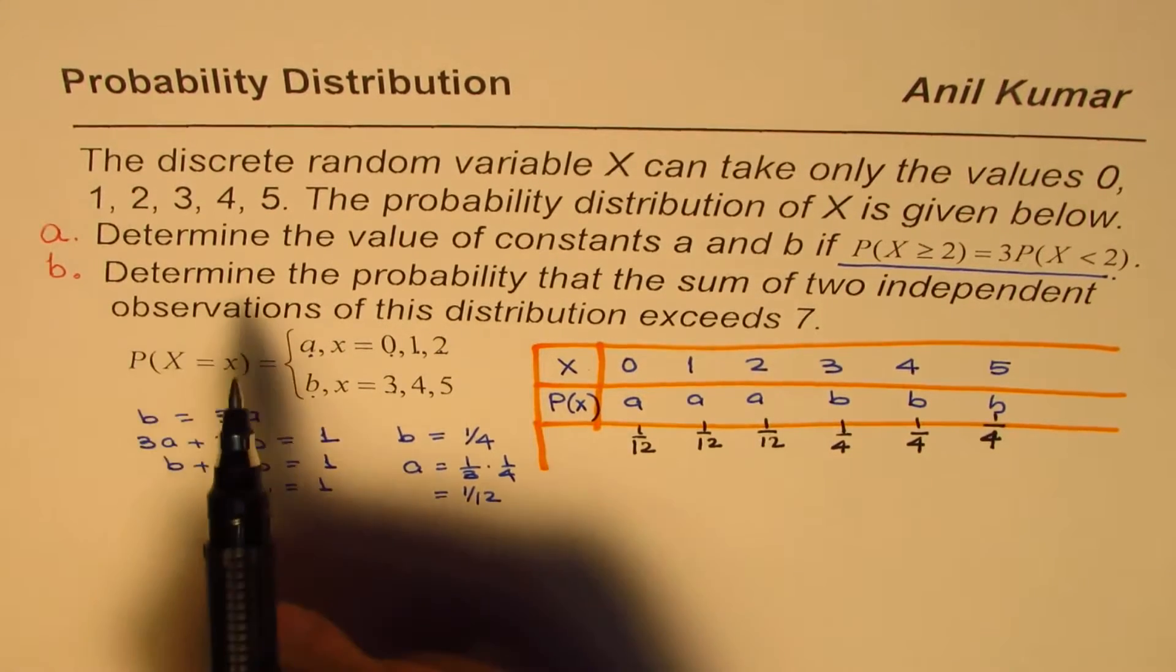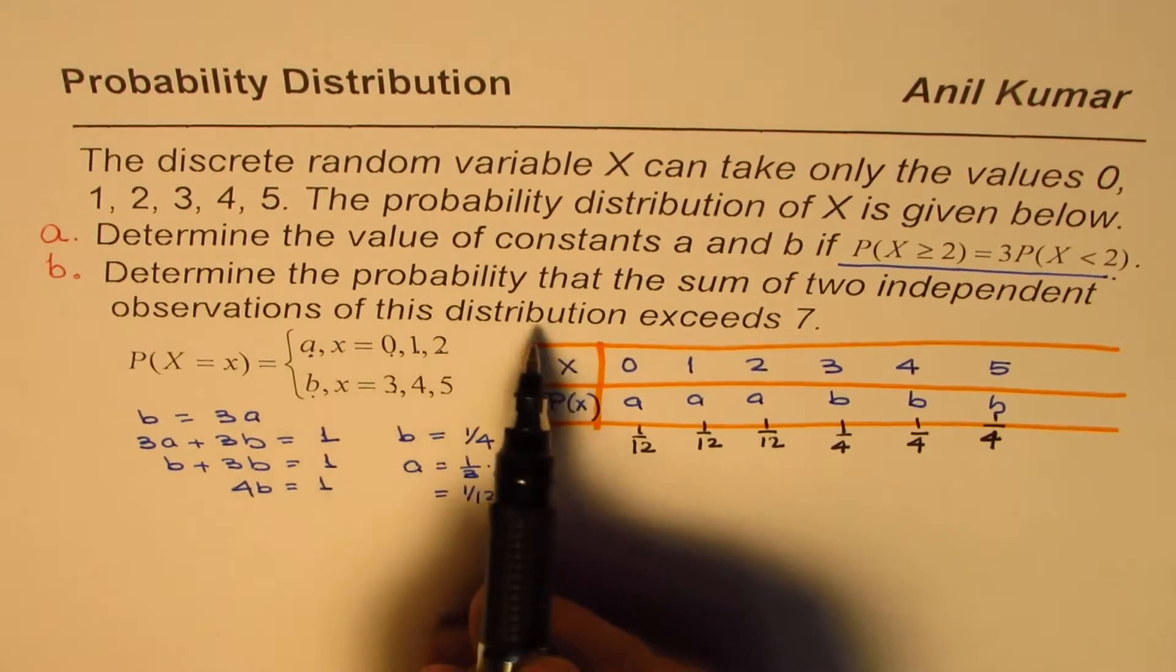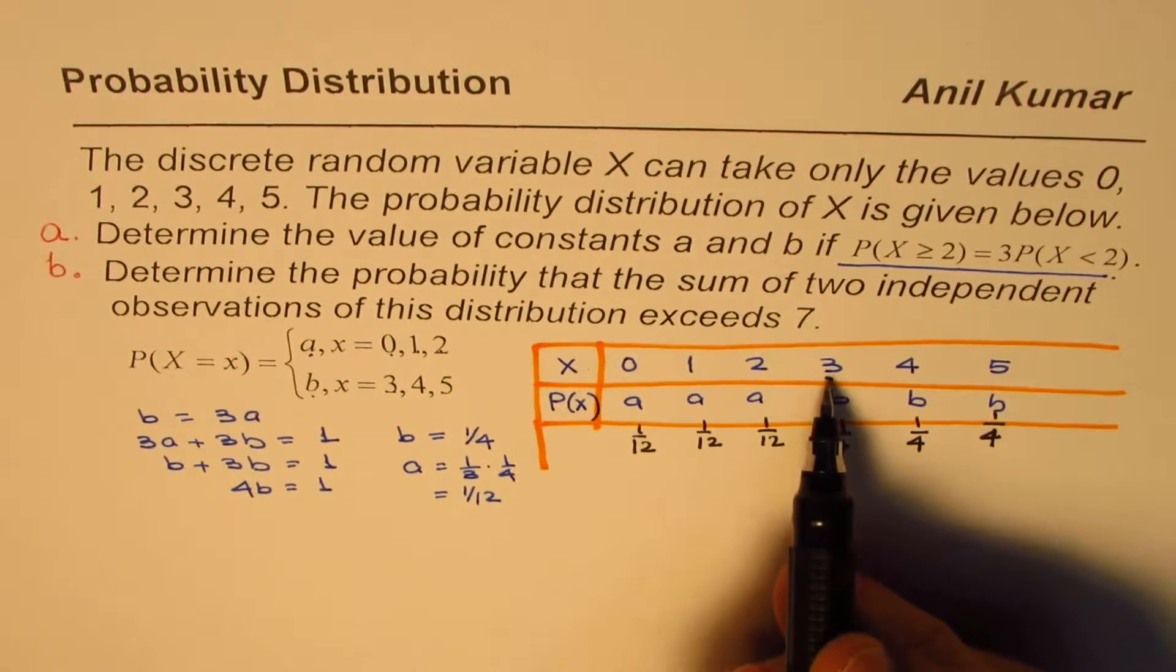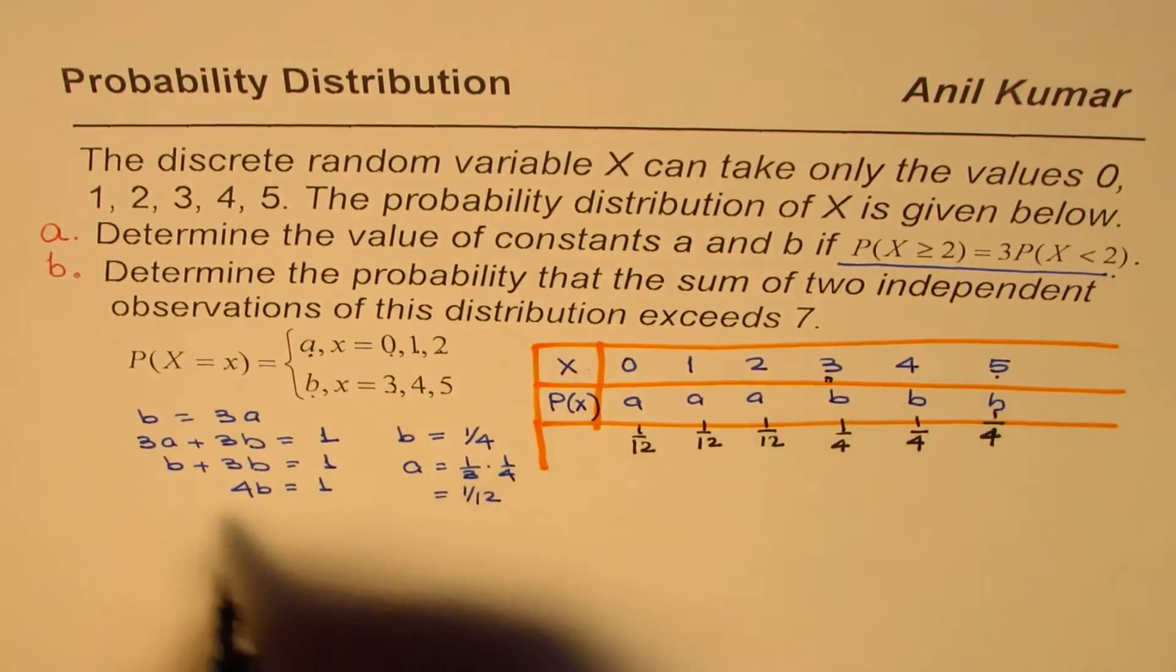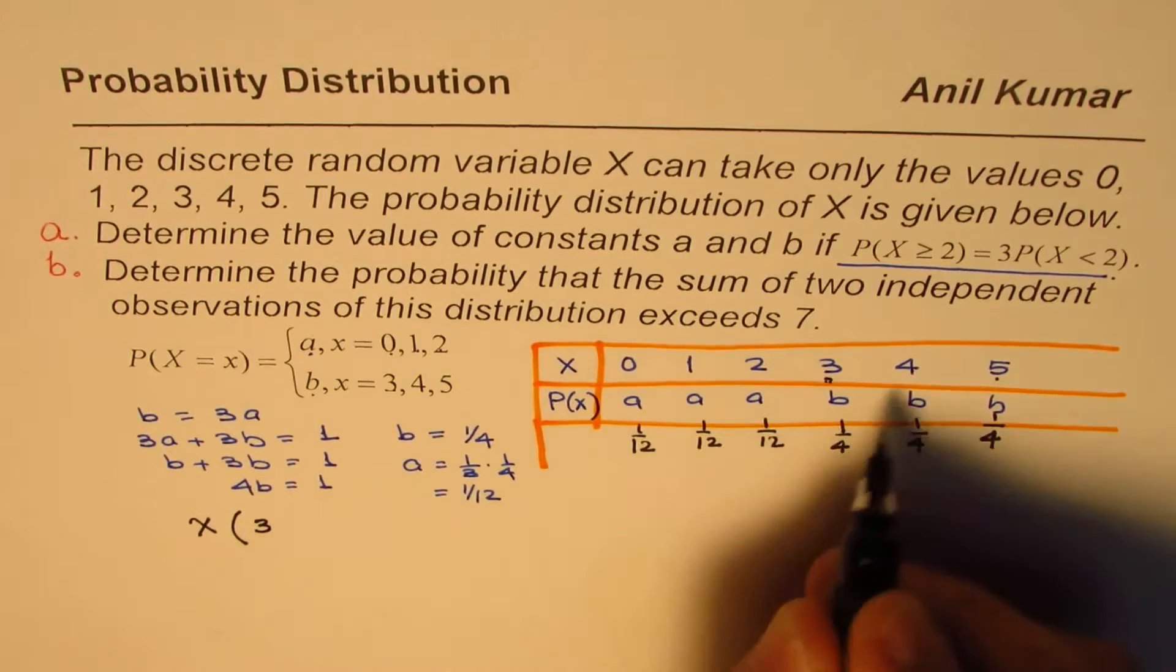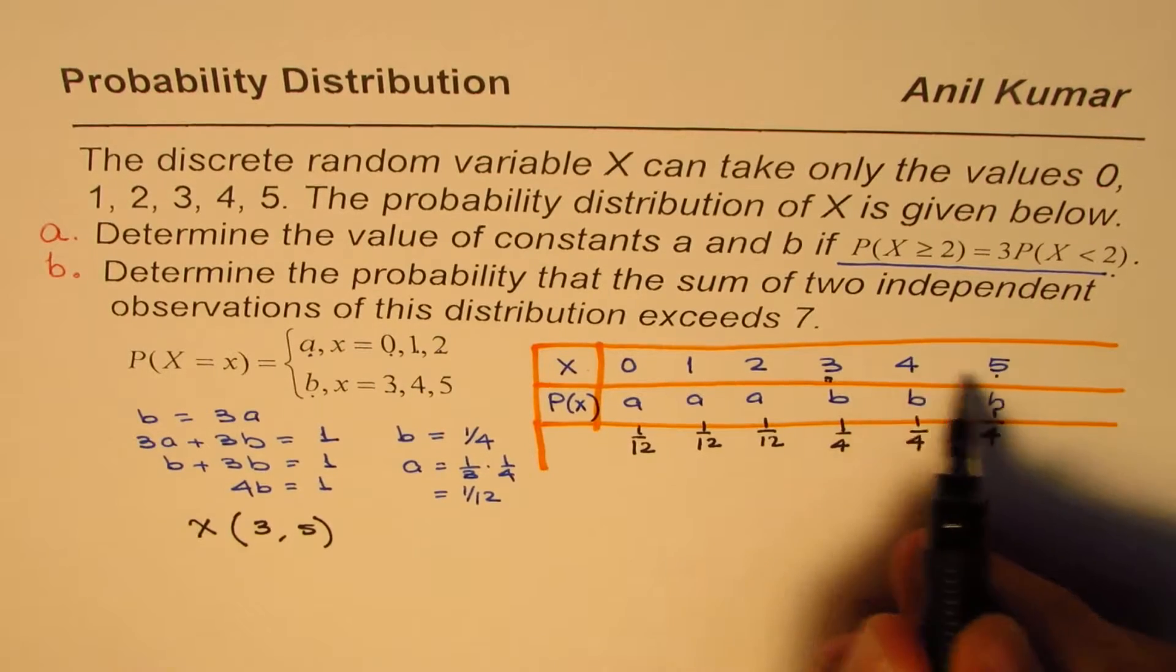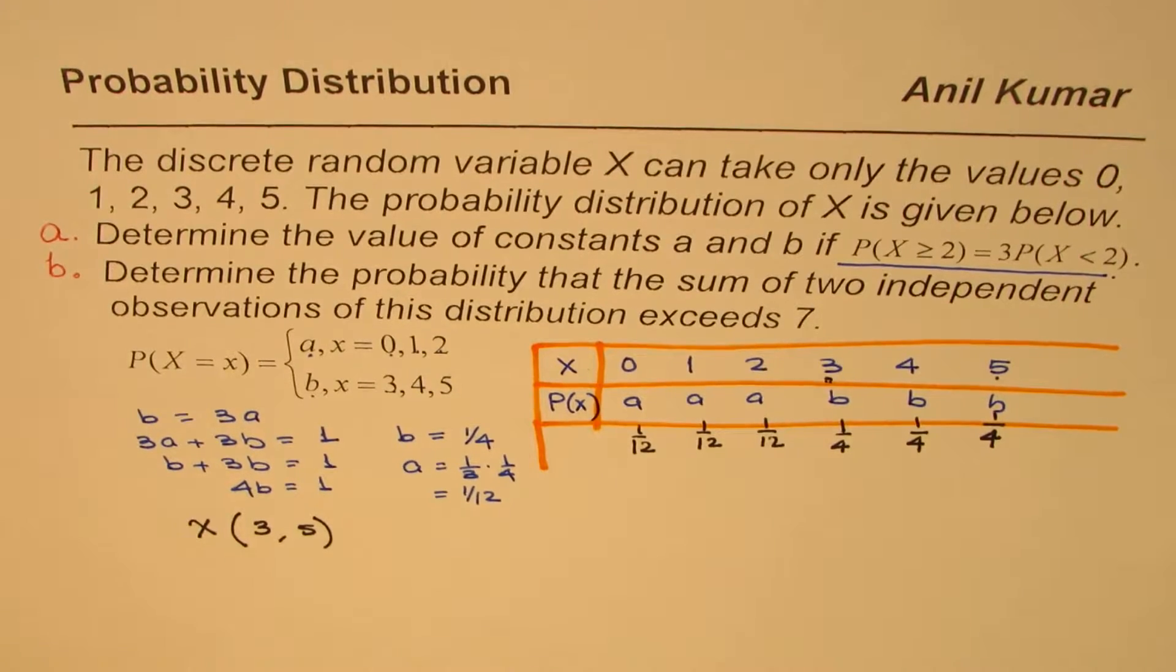Now let's look into part B, which says, determine the probability that the sum of two independent observations of this distribution exceeds 7. So what combination could exceed 7? So these are independent. That means we can multiply their probabilities. So one combination could be 3 and 5. So we could have x value as 3 or 5. So that is one combination. And the other combination is, we could have 4 and 5. So 3 plus 5 is 8, 4 plus 5 is 9. So those are the two combinations.